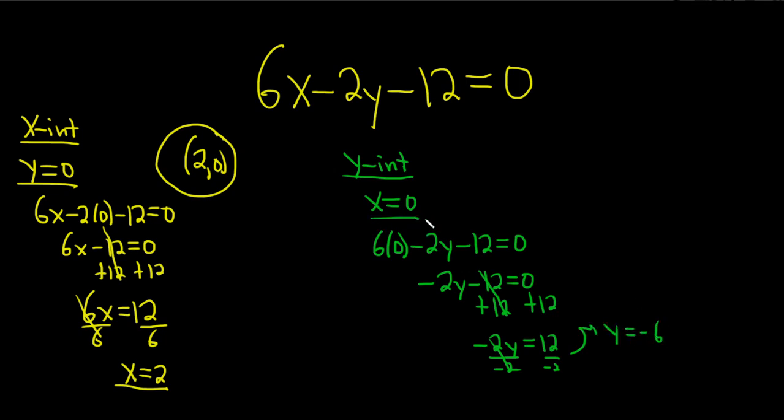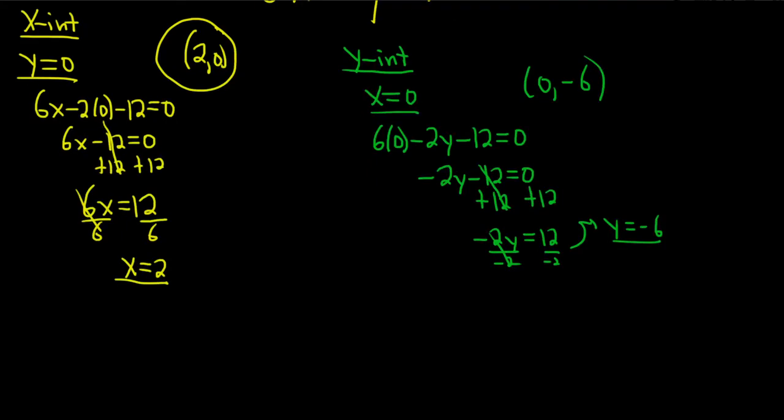So when x is zero, y is negative 6. So we have our other ordered pair, zero and negative 6. Okay, so now all we do is we plot these two ordered pairs and connect the dots and we're actually done.